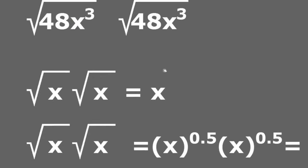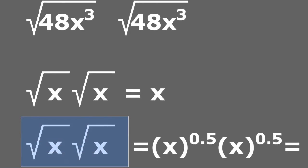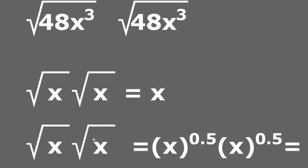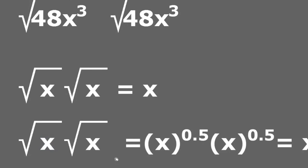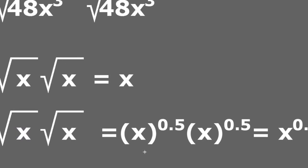If you want the whole explanation as to why the multiplication of two square roots with the same radicand eliminates the radical sign, think about it this way. The square root is the same thing as an exponent of 0.5, of one half. So the square root of x multiplied by the square root of x is the same as x to the power of 0.5 multiplied by another x also to the power of 0.5. In this case, I have the same base number and the same exponent.